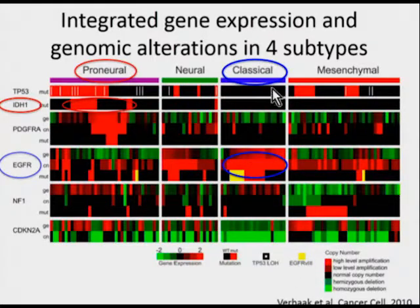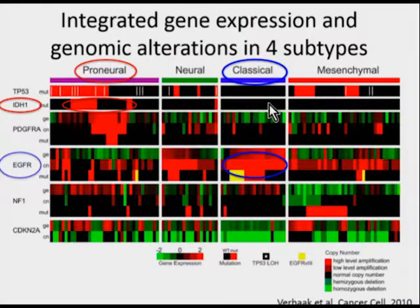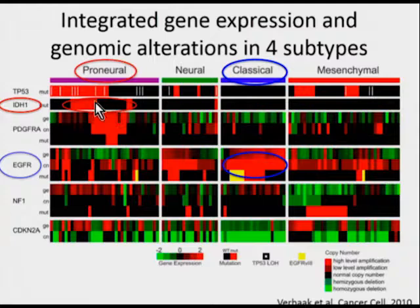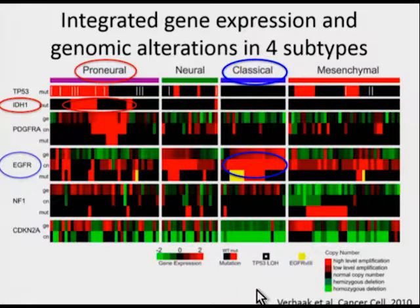The classical subtype comprises older patients with EGFR high-level amplification and no IDH1 mutations. In contrast, the proneural subtypes have a high rate of IDH1 mutation and no consistent EGFR mutations—two very different tumors. When separated out, these actually show different survival outcomes, as I'll show in a moment.